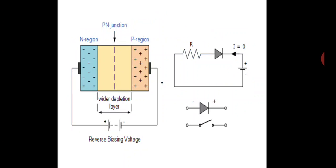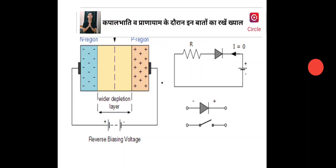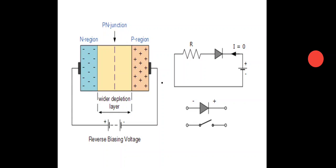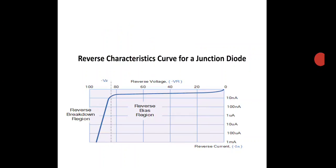Only a leakage current flows in the reverse direction, because the N-side has minority charge carrier holes and the P-substrate has minority charge carrier electrons. These minority charge carriers flow and produce a current in the microampere range. In reverse direction, only microampere and nanoampere current flows.